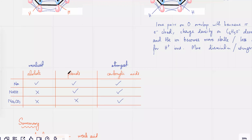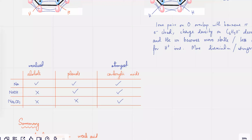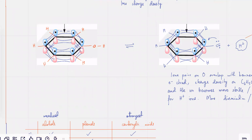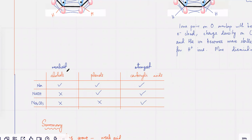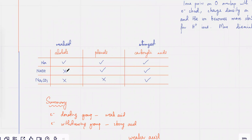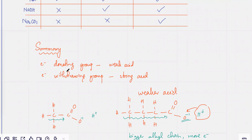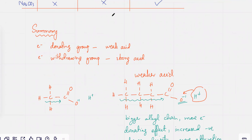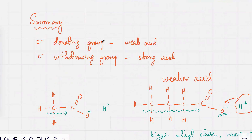So just remember why acids become strong, why do they become weak. It all depends on the donating effect or the withdrawing effect.